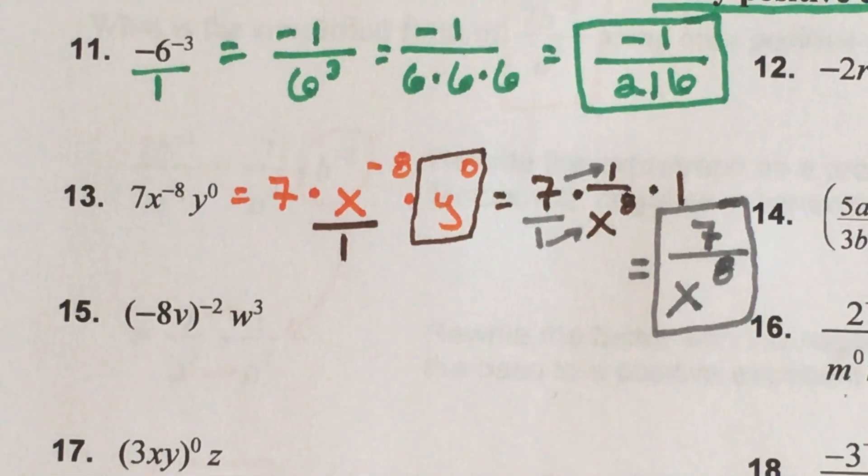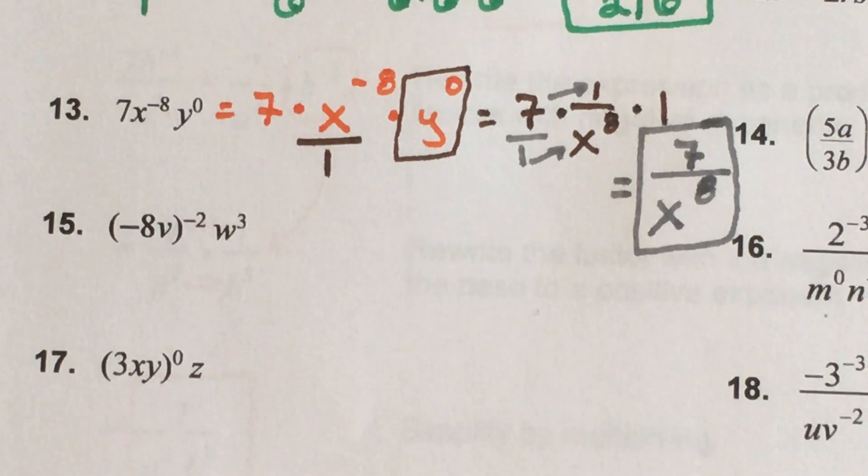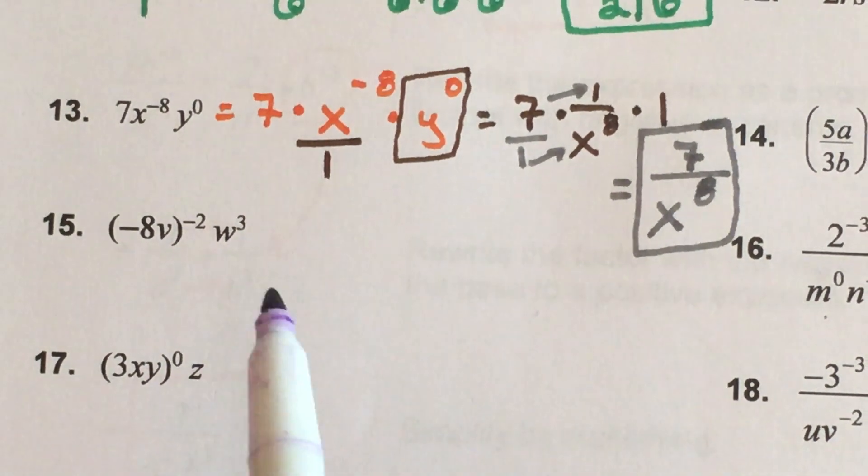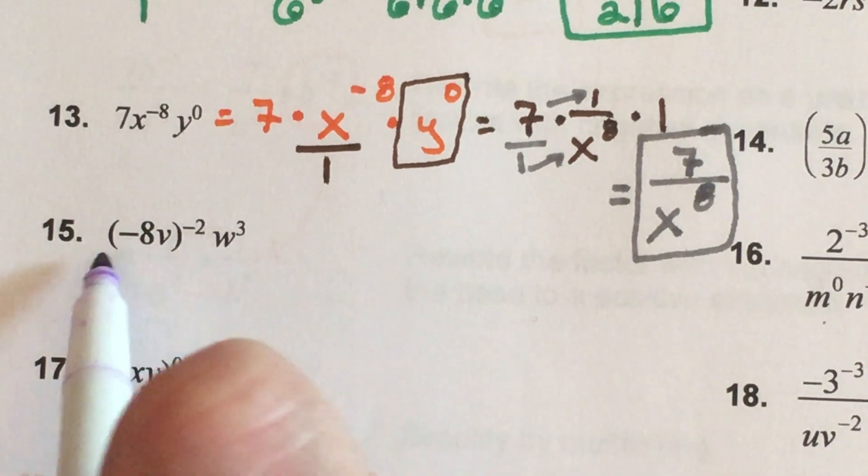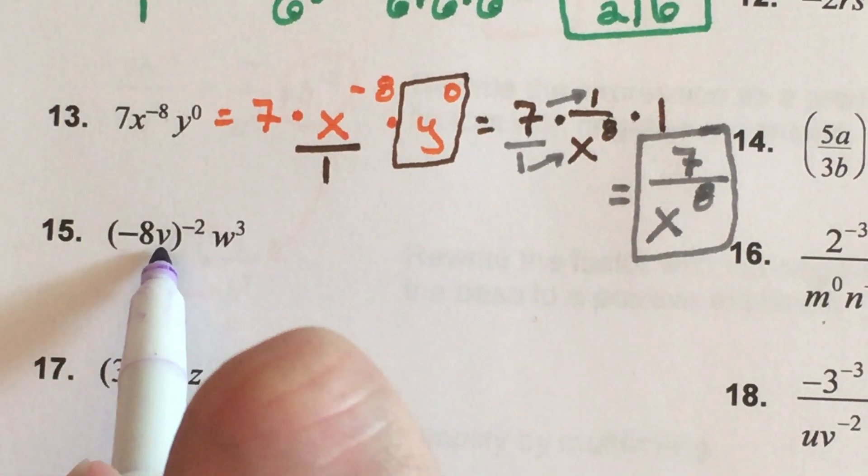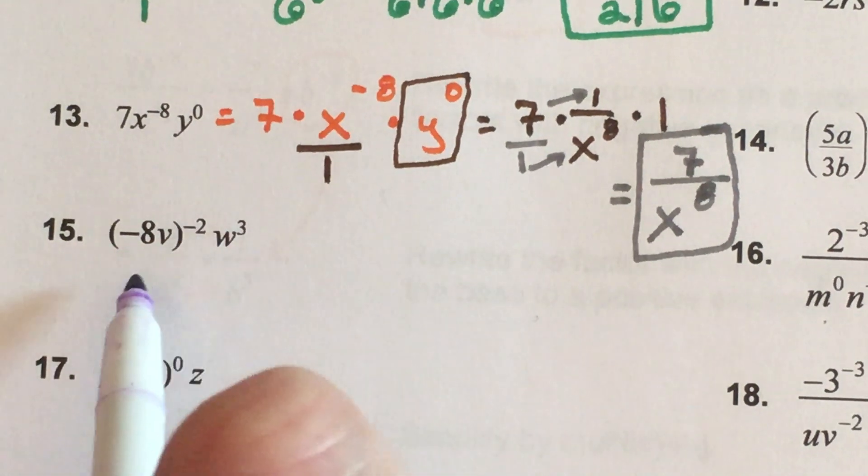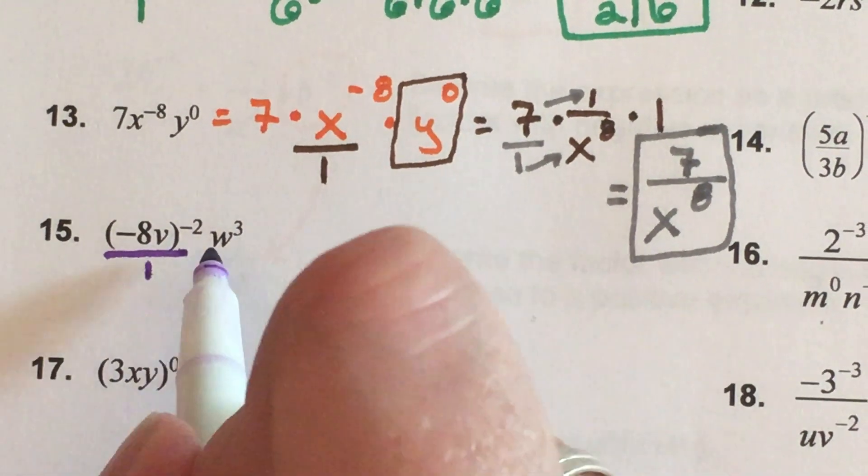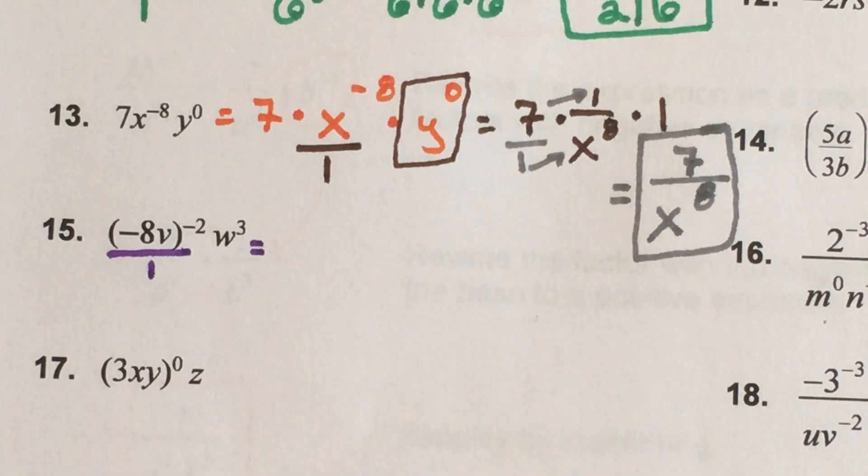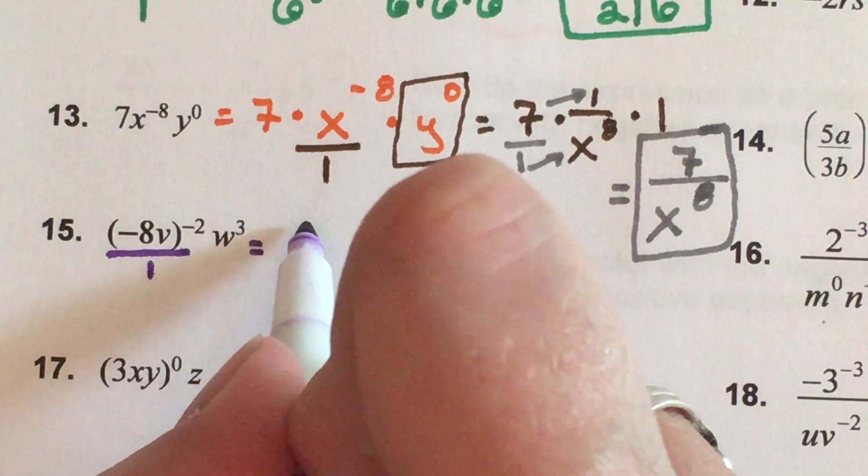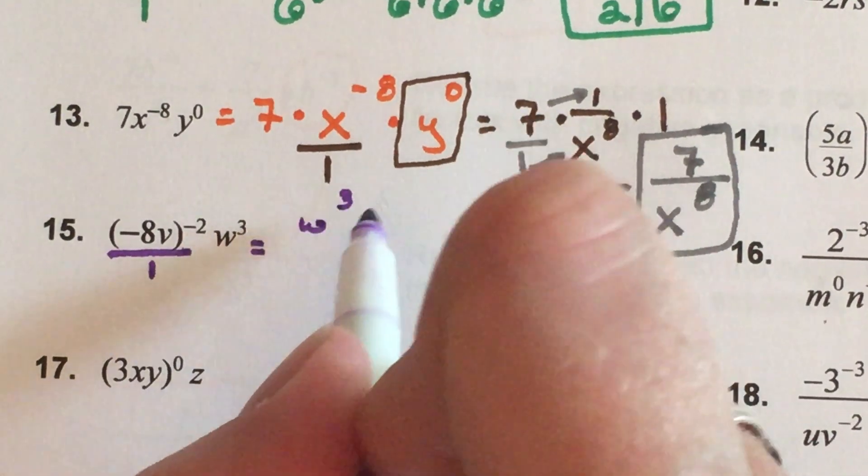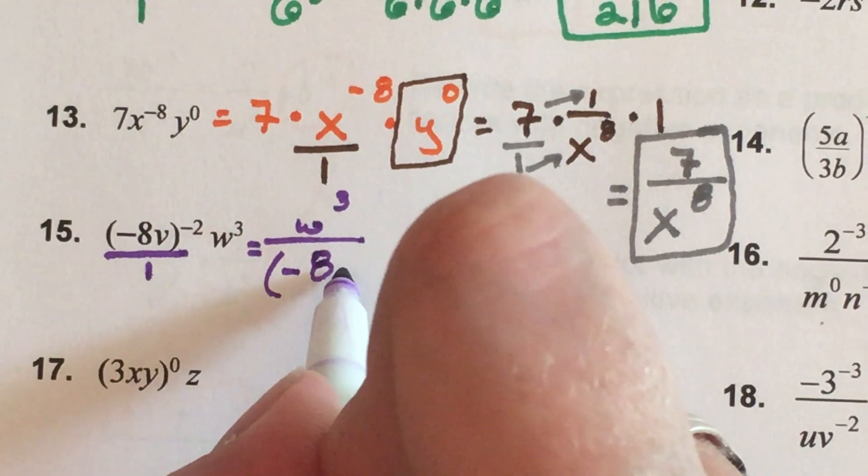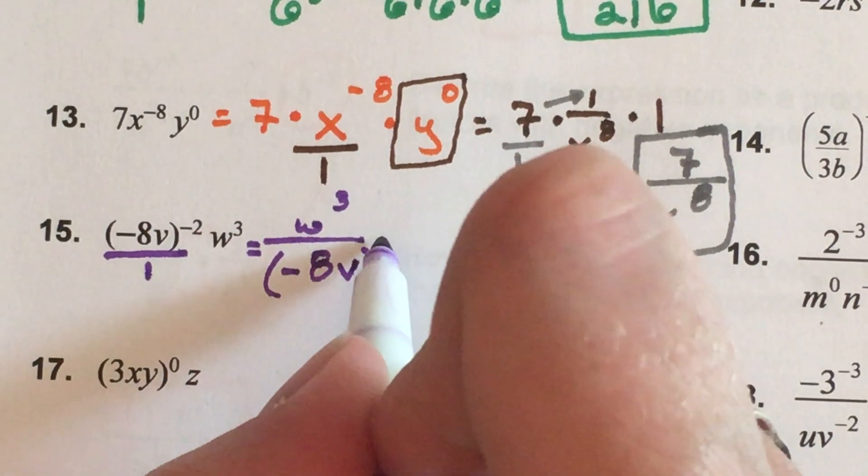Number 15. We have some parentheses in this one. We've got this quantity of negative 8v to the negative 2 power, so this is what's going to be flipped over to make the reciprocal. The w stays where it is in the numerator. So currently this will be w cubed over the quantity of negative 8v squared.